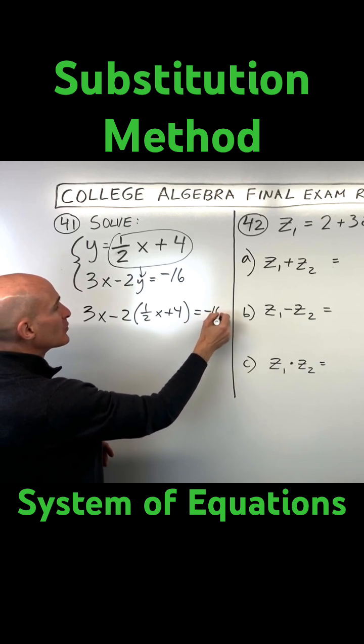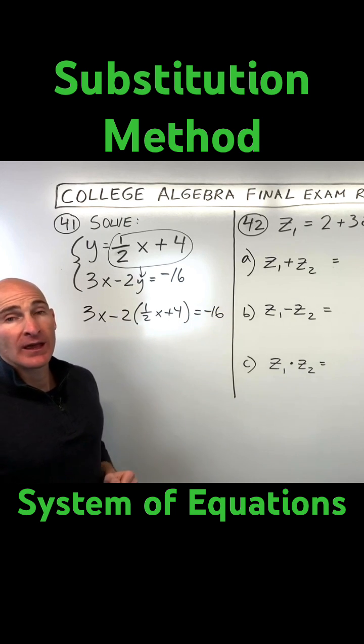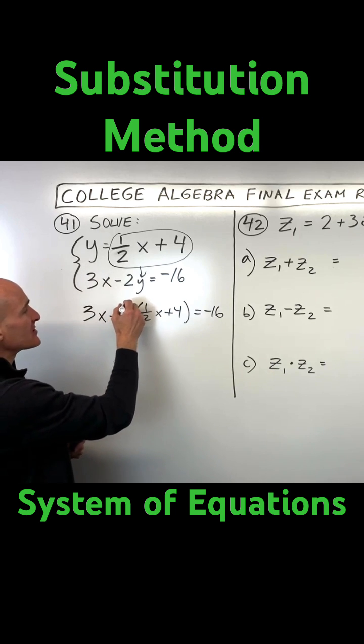and that whole quantity equals negative 16. Now we just have one variable and one equation. We can solve this system.